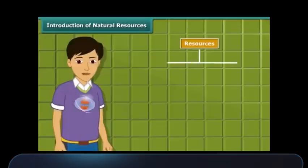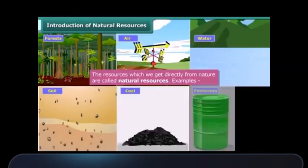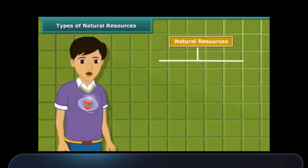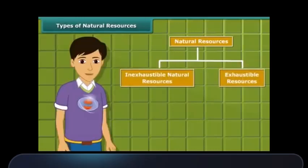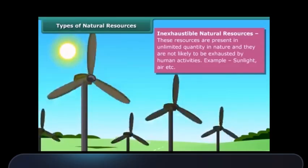Resources are of two types: natural and man-made. Natural resources such as forests, air, water, soil, coal, petroleum, and natural gas are directly obtained from nature. Natural resources can be broadly classified into two categories: inexhaustible and exhaustible. Inexhaustible natural resources are present in abundance and are unlikely to be exhausted by human activity. Sunlight and air are examples of such resources.